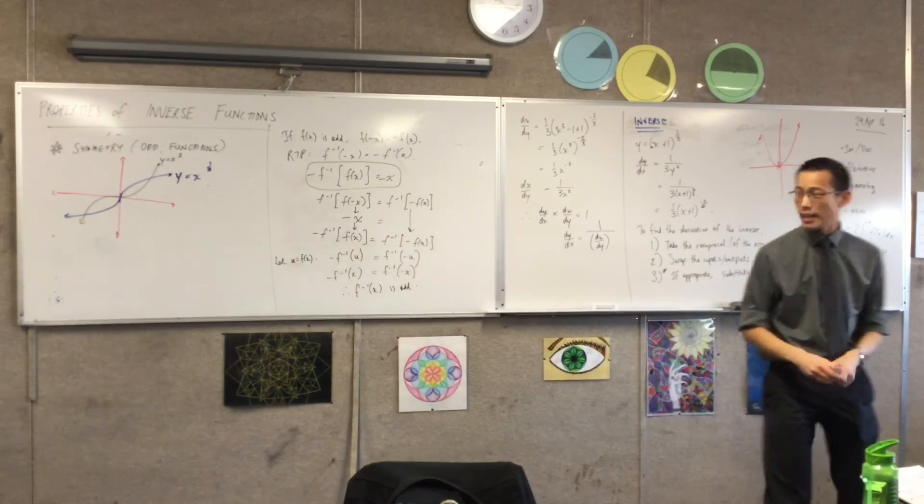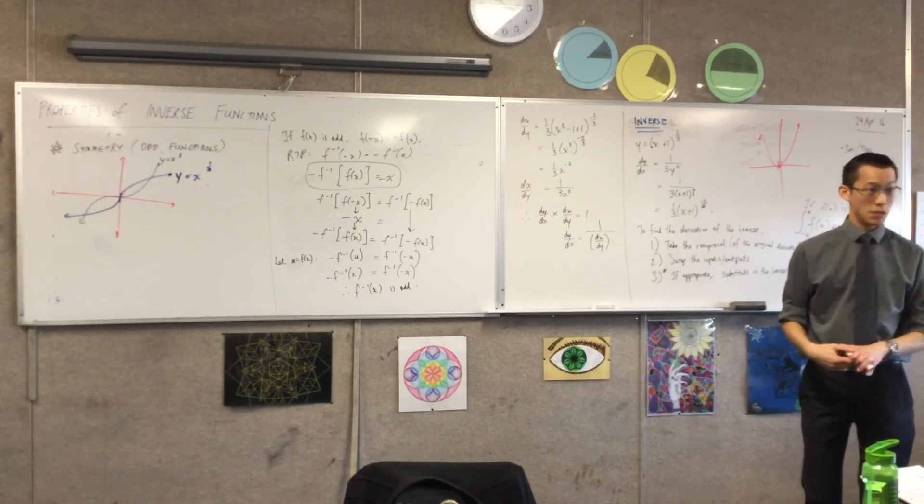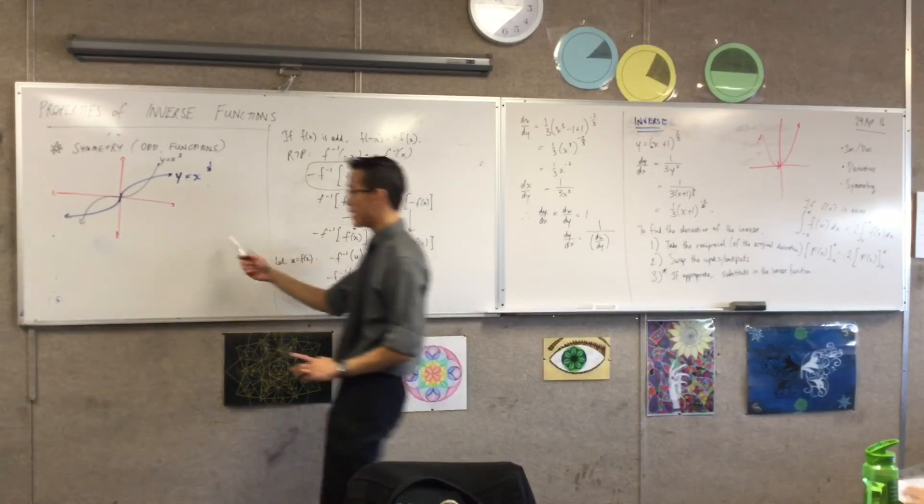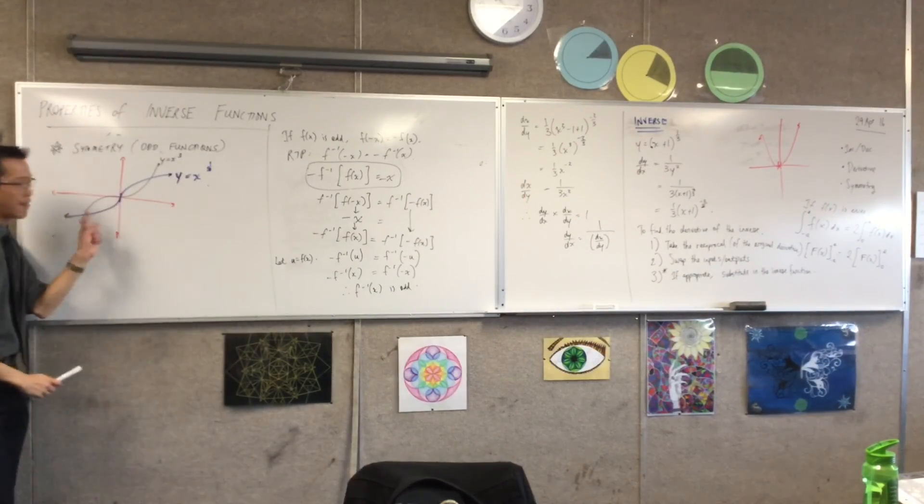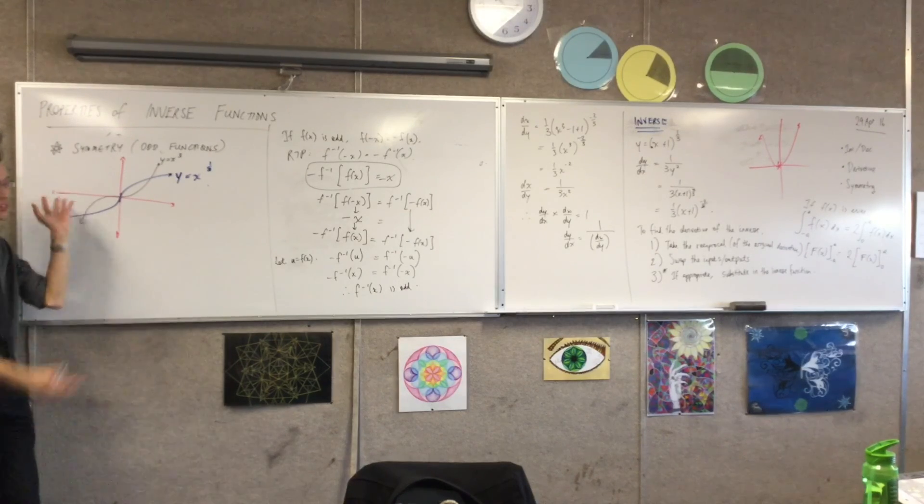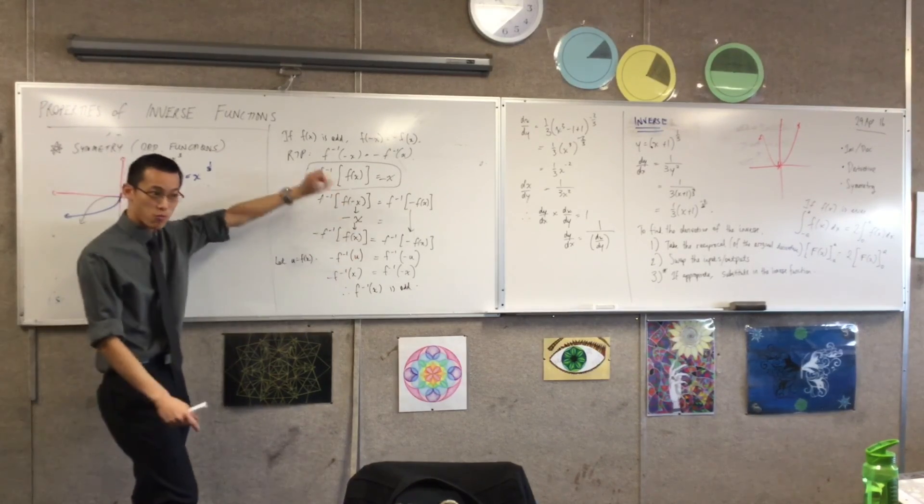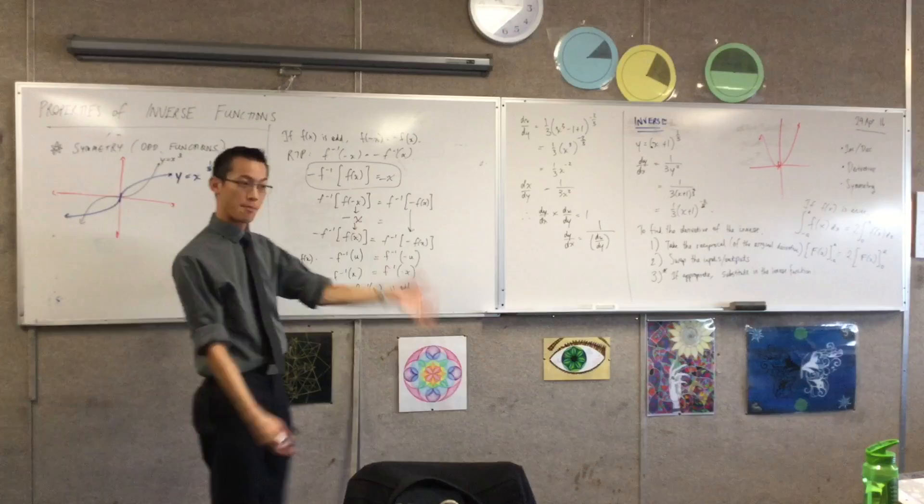Okay? So you can see here, pictures are nice, pictures are good, they help you understand things, but this is not a proof. I haven't proved anything here. I've just got something to look at, which is nice. This is proof. This is rock solid. You can stand on this and you can make conclusions.